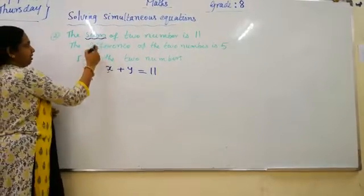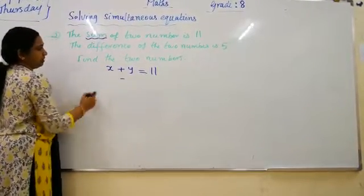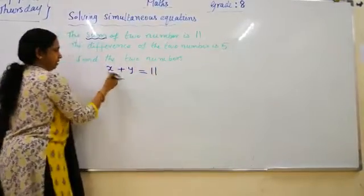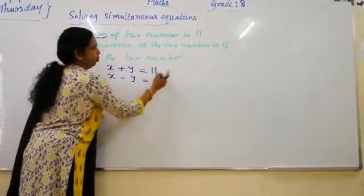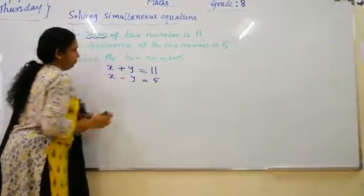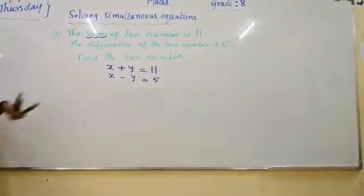And next one is difference. Difference means minus of the two numbers, any two numbers x and y. Is means equal, the number is five. So now we have got the equation.